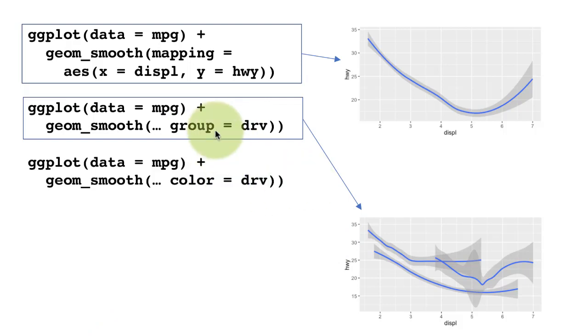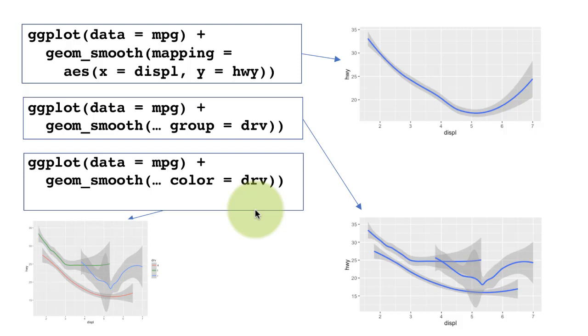So on the other hand, instead of the group aesthetic, I say color equals drive. Then that, of course, is going to divide the data into three parts, because we are saying, I want the color to depend upon the kind of drive. So obviously, it's going to divide into three parts, but each line is going to have a different color. So that's the difference. So I just thought that this slide will be useful to bring together some of these ideas.